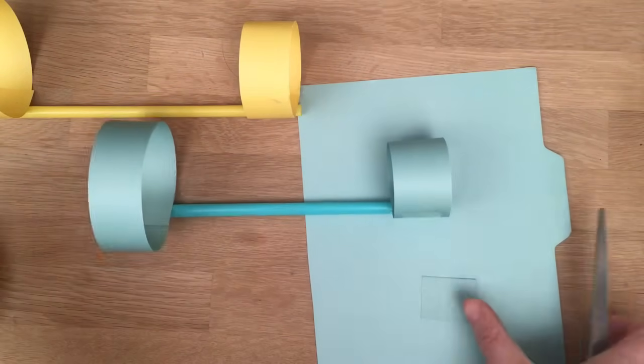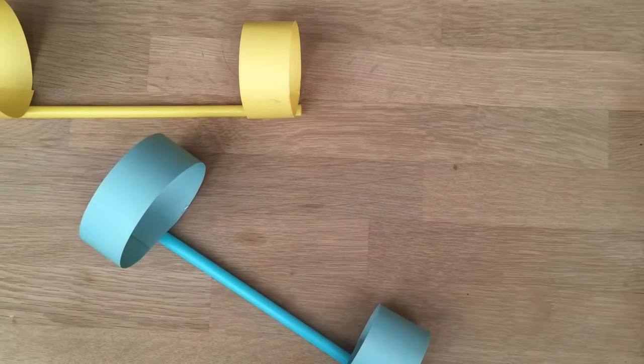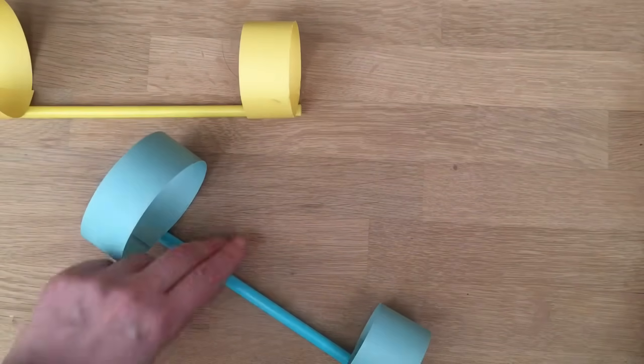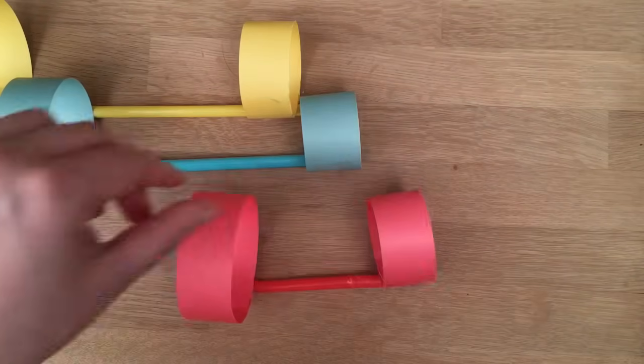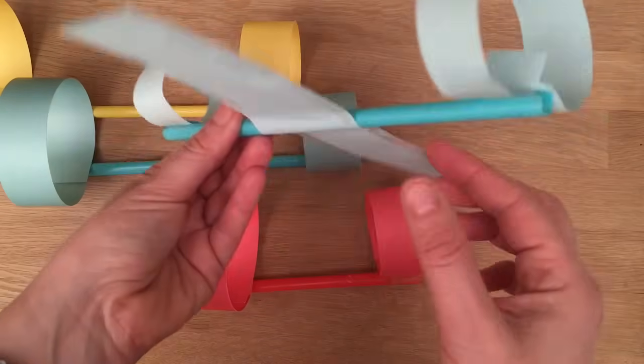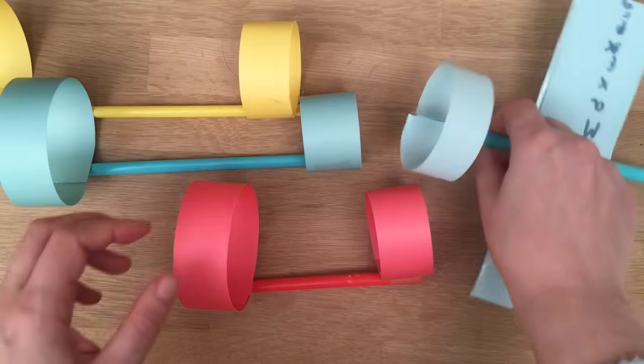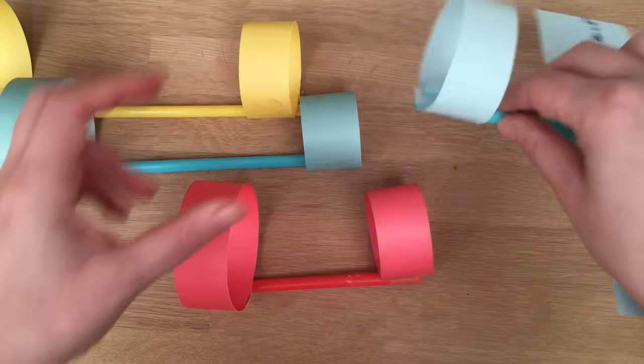Now to make this into a STEM project or a science project, you can try out different types of paper. You can try out different sized straws. You can try out making your own creations like this. Or you could, this is also a paper one at the back rather than a cardboard.